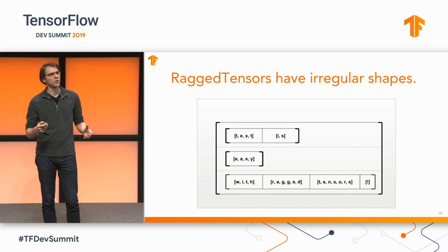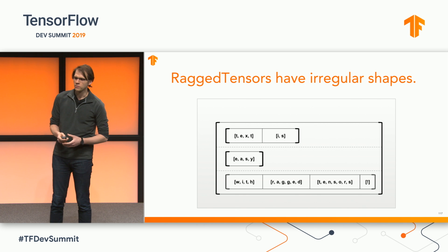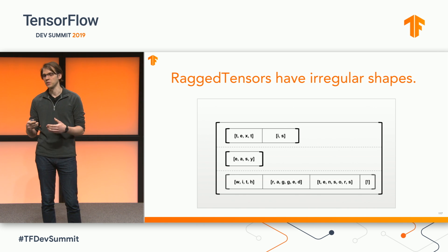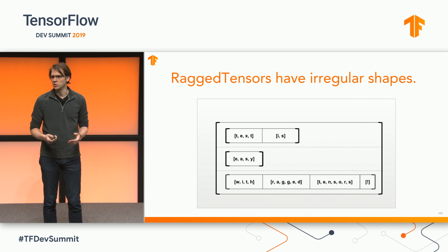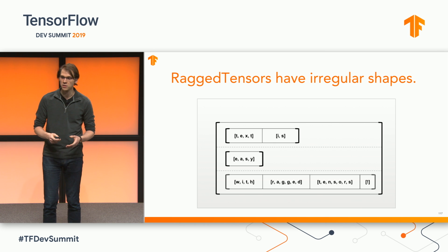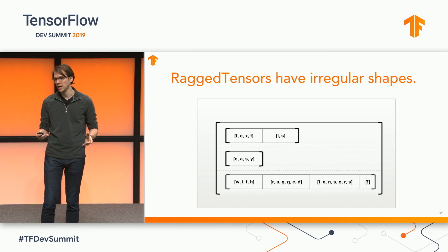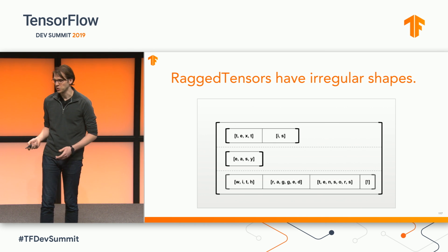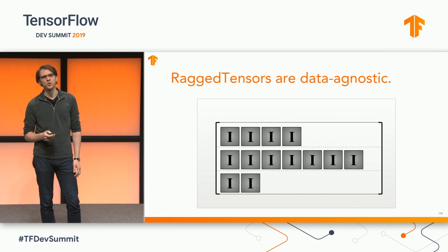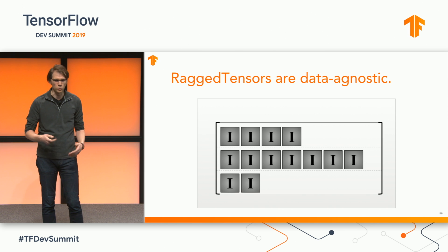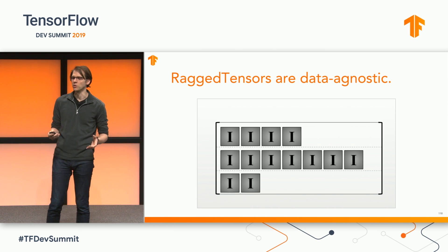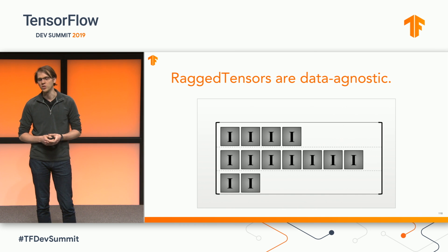A ragged tensor can contain any number of irregular dimensions. Here, for instance, we have a three-dimensional ragged tensor that represents every character in every token in a batch of three sequences. There are variable numbers of tokens per sequence and variable numbers of characters per token, but with ragged tensors you don't need to worry about maximum sizes, padding, or anything else. Ragged tensors are a native TensorFlow representation for any varying length sequence of data, from words to images and beyond. You could imagine using ragged tensors to contain the set of still frames in a batch of videos, where each video is a different length.